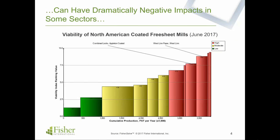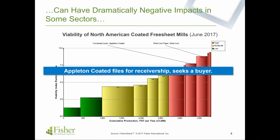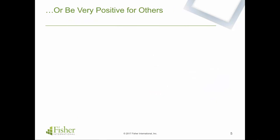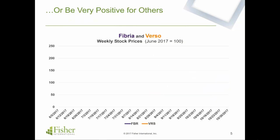On this chart from Fisher Solve, you're seeing a viability benchmarking index — red is at risk, green is healthy. I've indicated two particular North American coated free sheet mills: Appleton Coated and West Lynn. Both were non-integrated, meaning they had to buy market pulp to furnish their mill. Subsequent to this June 2017 chart, both Appleton Coated and West Lynn filed for bankruptcy and went out of business. For some sectors in the industry, these global implications can have very negative impacts.